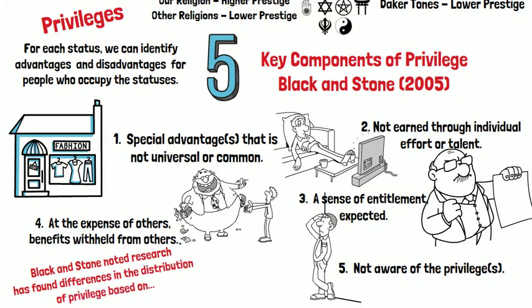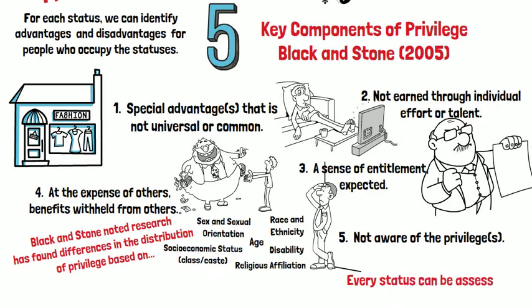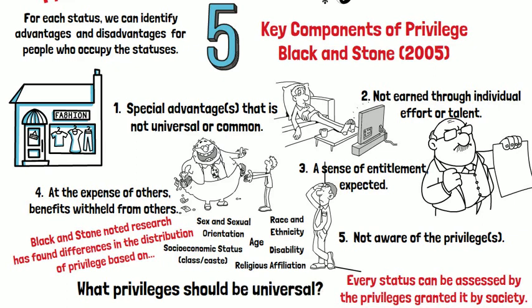Blackstone noted that research has found differences in the distribution of privileges based on sex and sexual orientation, race and ethnicity, socioeconomic status, class and caste, age, disability, and religious affiliation. Every status can be assessed by the privileges granted to it by society. So we can ask ourselves: what privileges should be universal — what should actually be human rights?